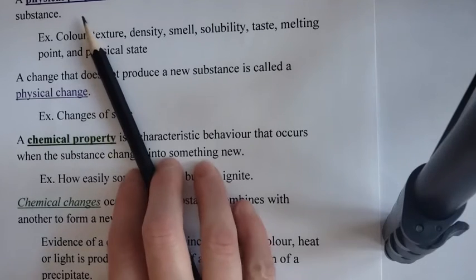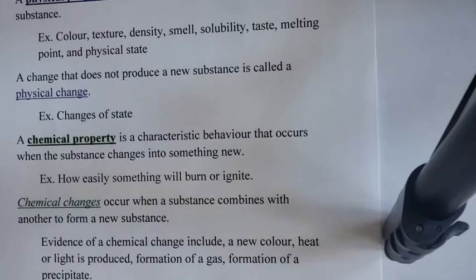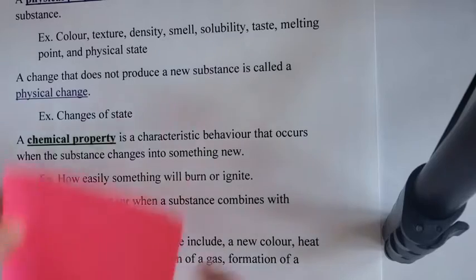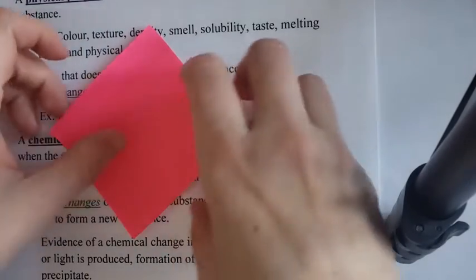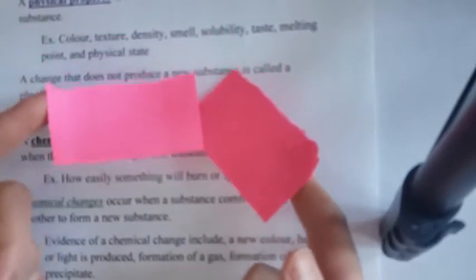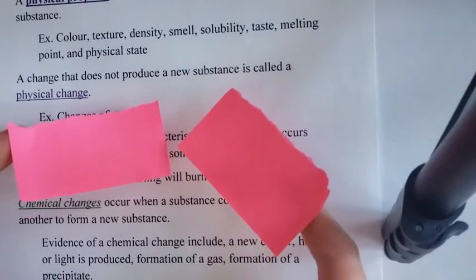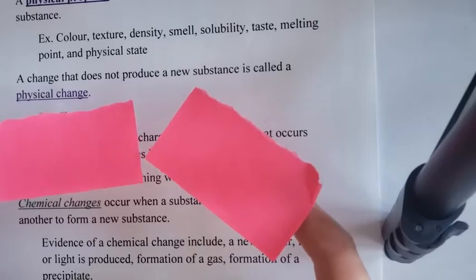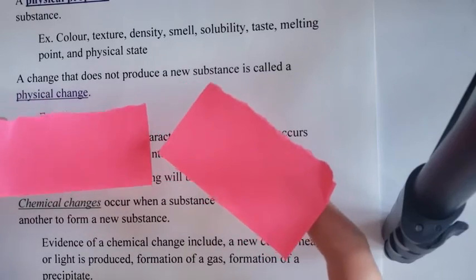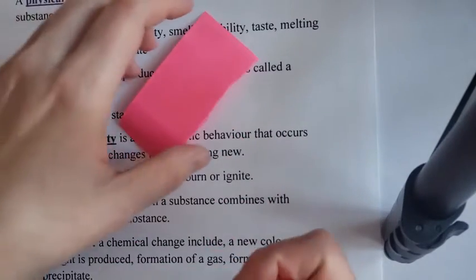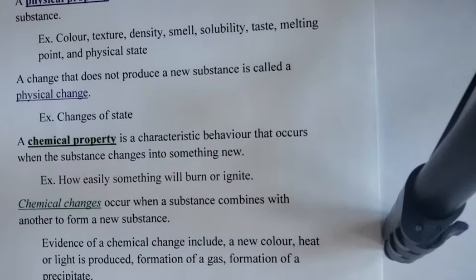Changes of state are a physical change. Another example of physical change is if I take my little post-it here and rip it in half. It's still the same piece of paper — I've just changed the shape a little bit. So ripping something in half or cutting it in half is considered a physical change, not a chemical change.